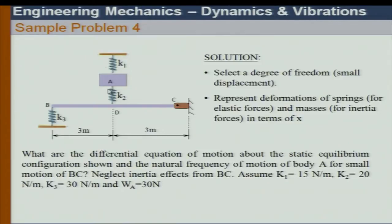Now we have a horizontal bar with a mass on top. Assume that BC is massless. If BC has no mass, how do I get the equation of motion? It is very similar to the series spring system we studied — like springs in series where there is no lumped mass at the middle.